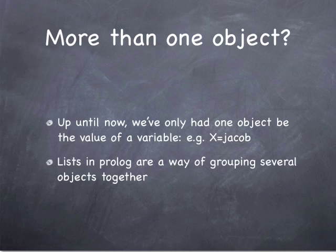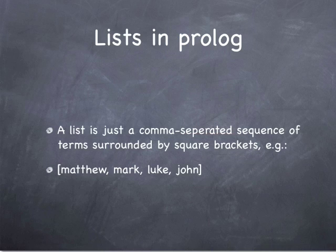Okay, the concept that I want to introduce for Prolog today is the concept of a list. Up until now, we've only had one object as the value of a variable. What if we want to deal with more than one object at a time? So lists in Prolog are a way of grouping several objects together. Lists have a very simple syntax. You just separate by commas whatever the objects are that you want to put in the list, and then enclose the whole thing in brackets. So let's go over to the terminal, and I will demonstrate this.